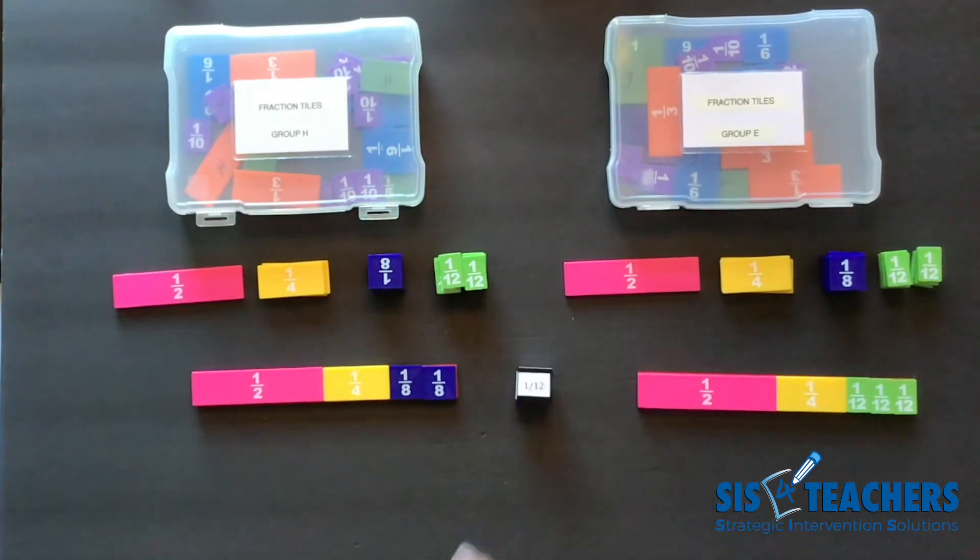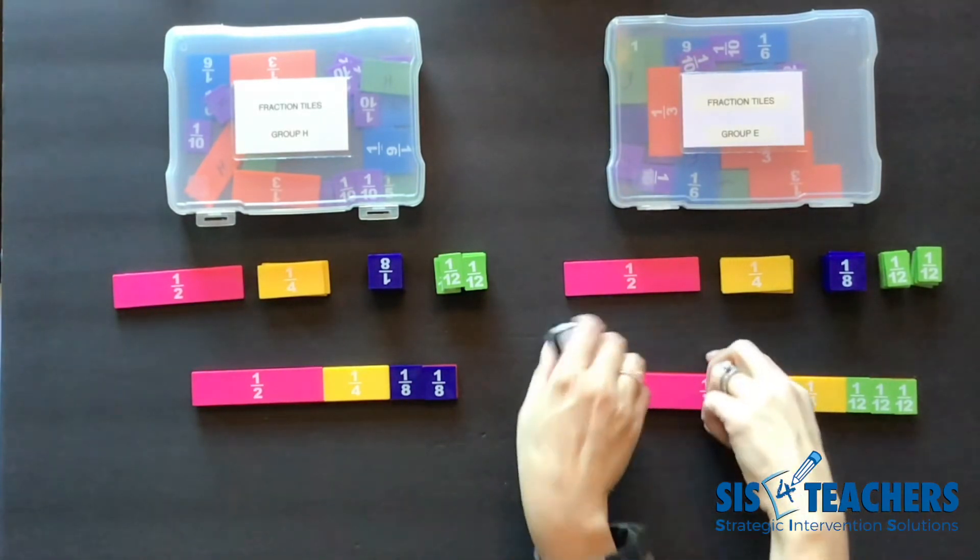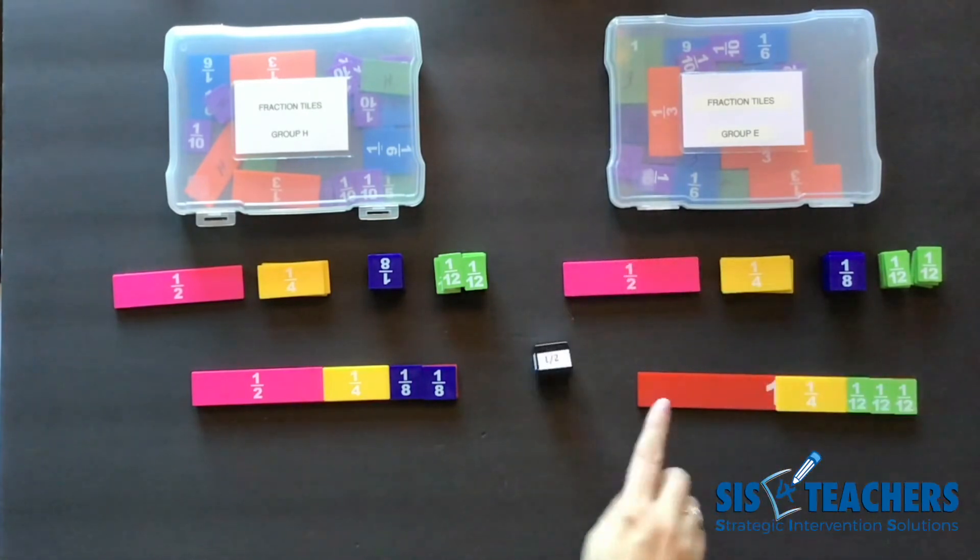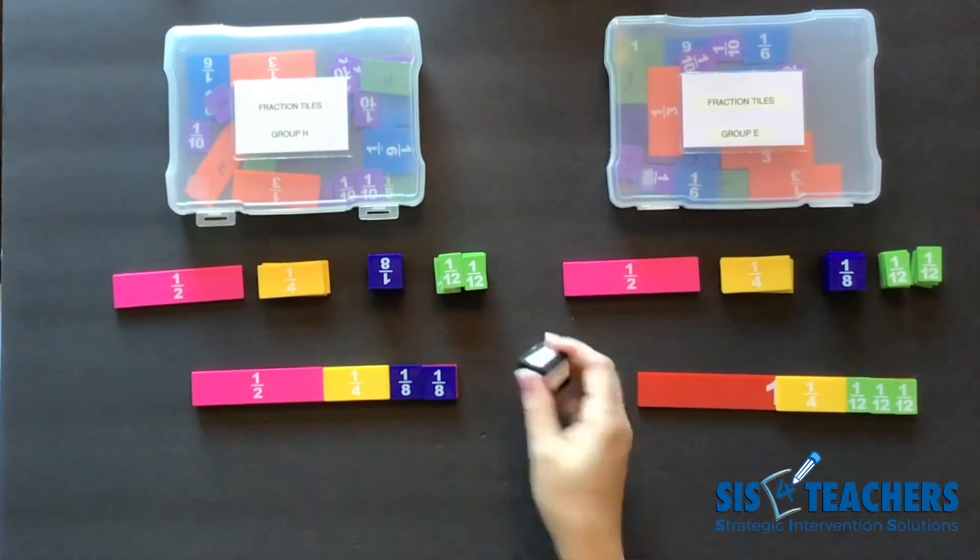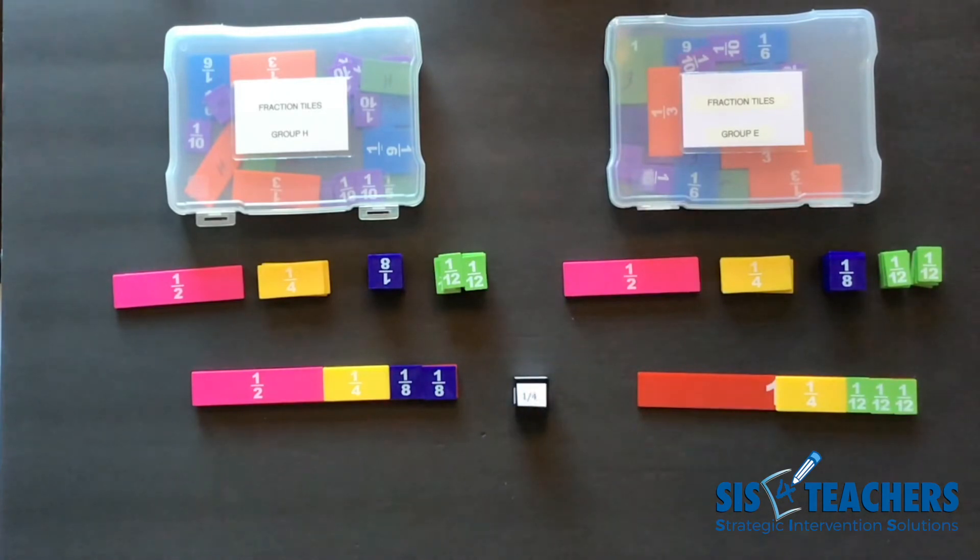So I'm going to roll and I get a twelfth. In this case I'm going to choose to pass. My partner got a big bonus of taking off half so hers is halfway uncovered where mine is not so much.